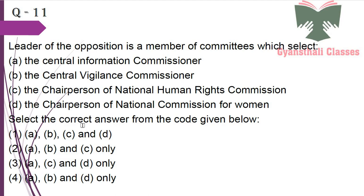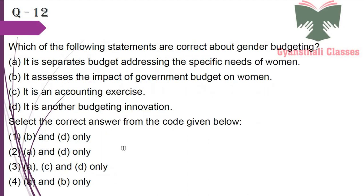Next question: The Leader of the Opposition is a member of committees which select — the Central Information Commissioner yes, the Central Vigilance Commissioner yes, the Chairperson of National Human Rights Commission yes. Only these three are included, so the answer is A, B and C.